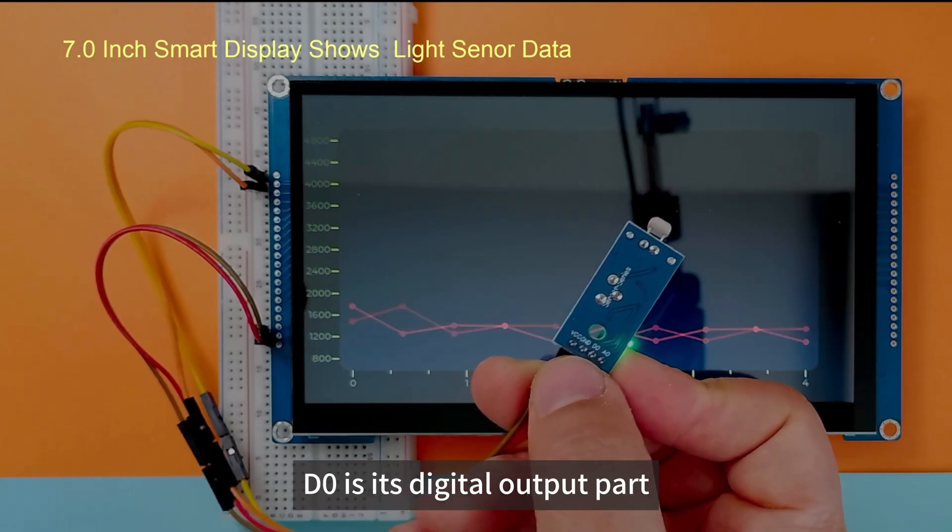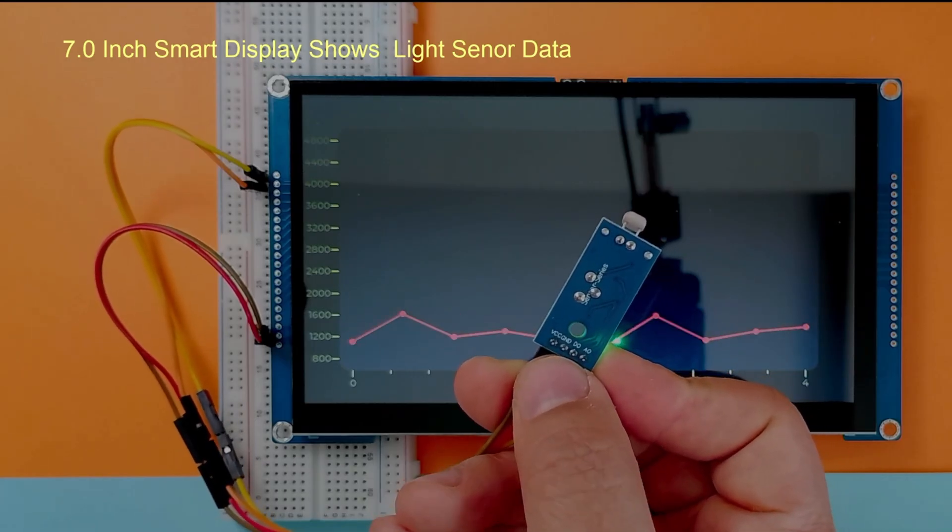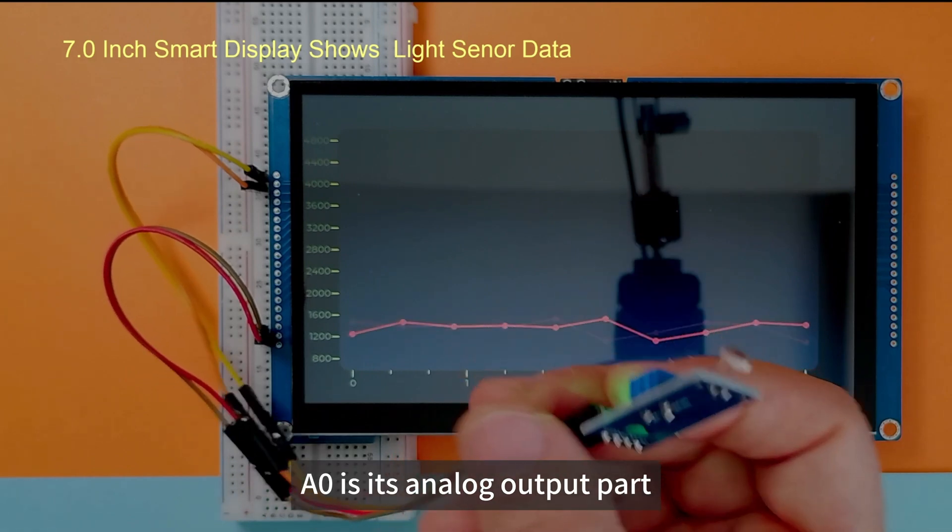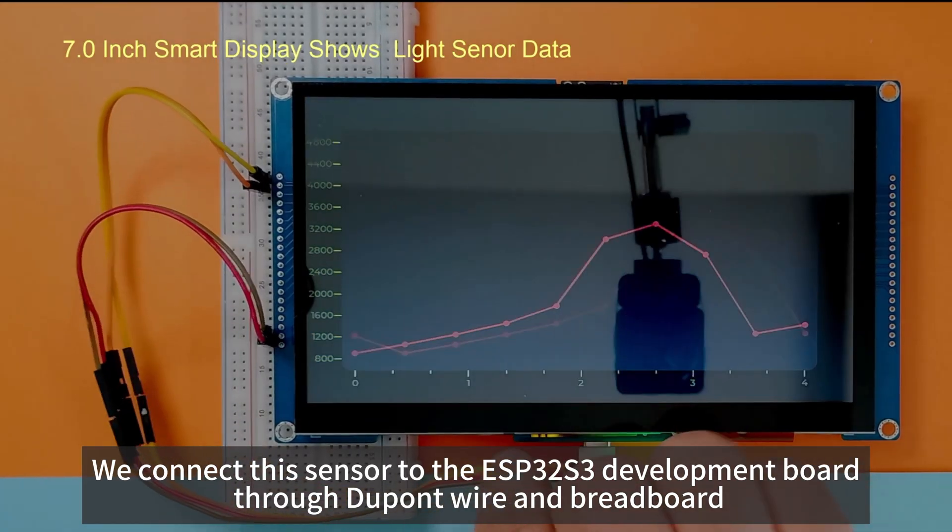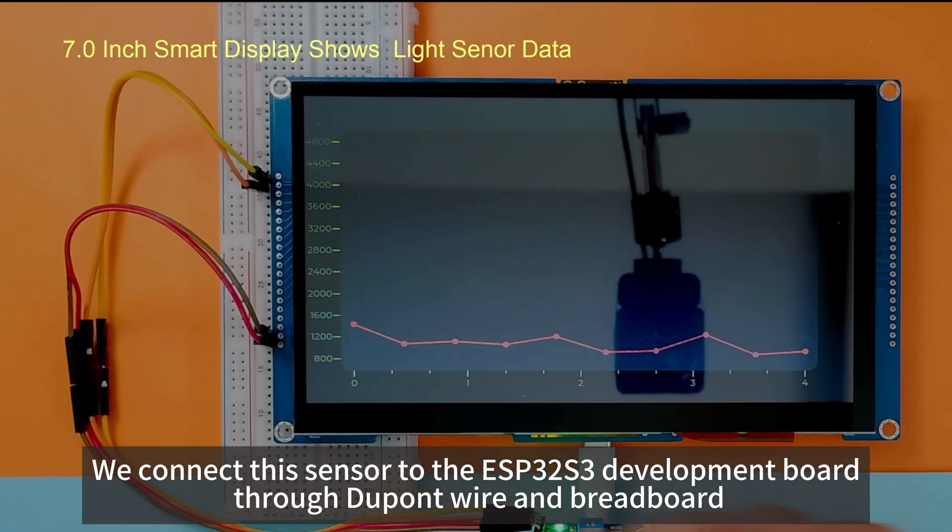DO is its digital output part. AO is its analog output part. We connect this sensor to the ESP32-S3 development board through DuPont wires and breadboards.